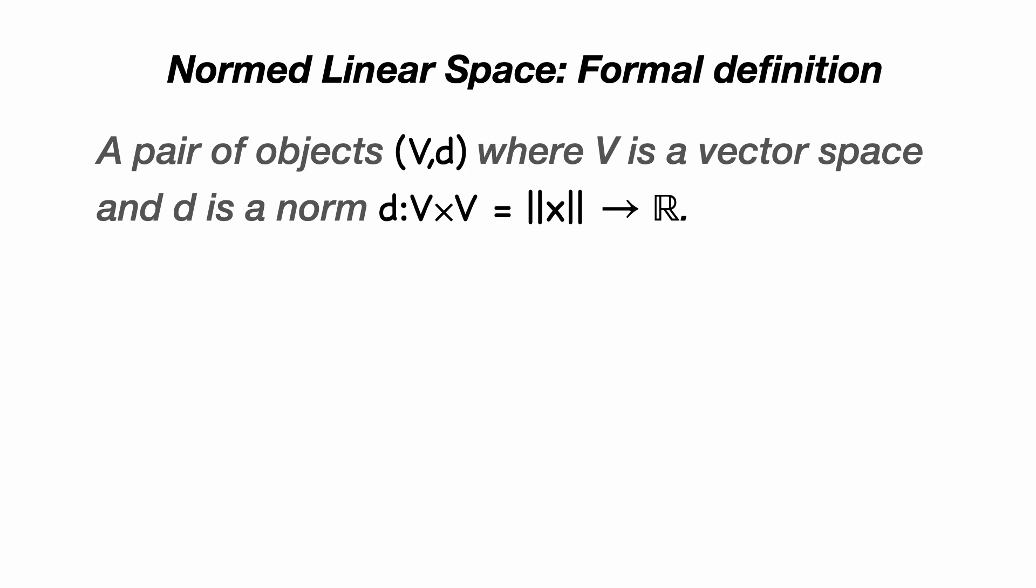A norm must satisfy four properties. Namely, it must be greater than or equal to zero. If the norm of x is equal to zero, then the vector itself is the zero vector.